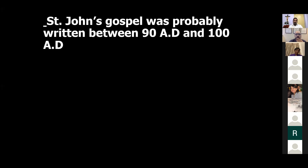St. John's Gospel was probably written between 90 AD and 100 AD. John was captured and put on the island of Patmos around 90 AD, and he died in 100 AD — so somewhere in between, all the books of John were written. That is the theory of the church.